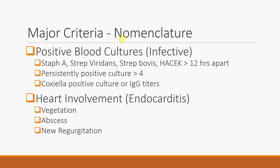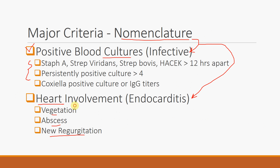There are two major criteria: cultures and heart involvement. For cultures, any one of the specific positive blood culture criteria constitutes one major criterion checkpoint. For heart involvement, we primarily use radiographical evidence — specifically, transesophageal echocardiogram. If you see a vegetation, abscess, or new onset regurgitation, this is suggestive of heart involvement and constitutes the second major criterion. These two major criteria are most relevant clinically for defining whether a patient truly has definitive infective endocarditis.